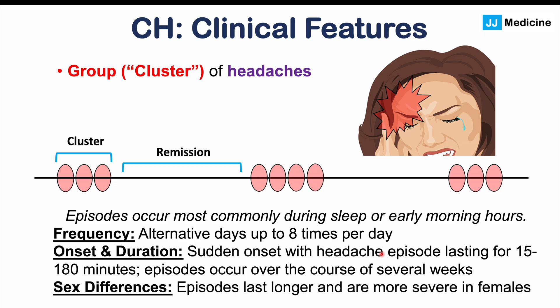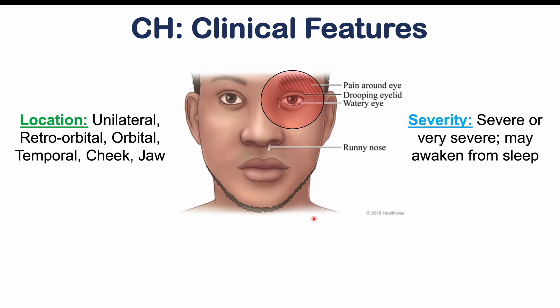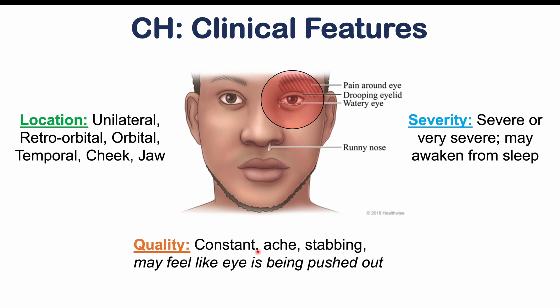There are sex differences: episodes last longer and are more severe in female patients. So although males are more likely to have cluster headaches, when females have them they are generally longer and more severe. The cluster headache involves a unilateral headache — on one side. The pain is retroorbital, meaning behind the eye or around the eye, and can cause temporal, cheek, or jaw pain. The severity is often severe or very severe — it can awaken patients from sleep. The quality is a constant aching or stabbing sensation, and it may feel like the eye is being pushed out or bulging out.